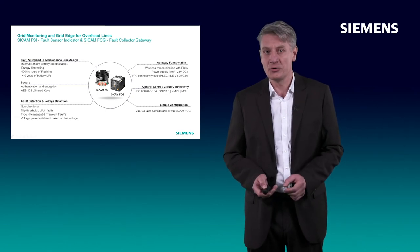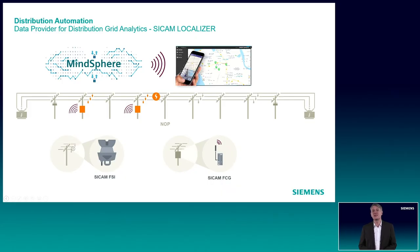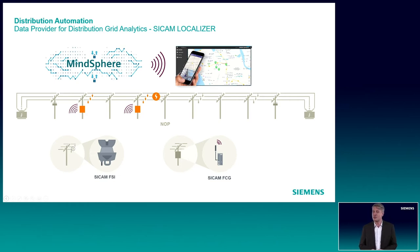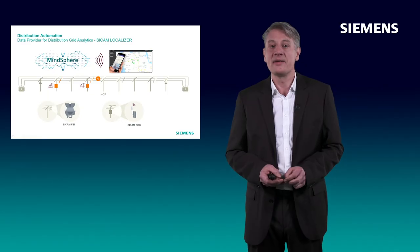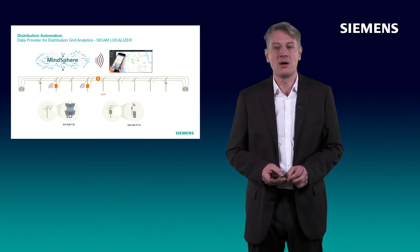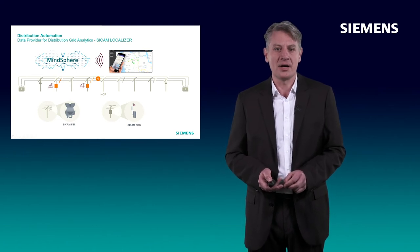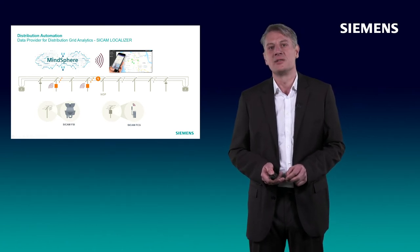This information is also shipped to SCADA. You see here the FSI, which is mounted on the distribution grid, and the FCG, which is mounted on the pole. With cloud connectivity to MindSphere, this information is provided to the SICAM Localizer application, which is part of the SICAM Grid Suite.